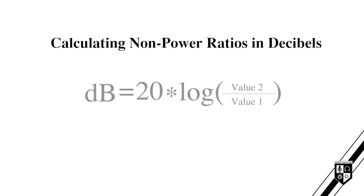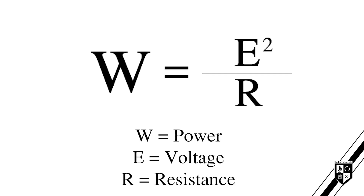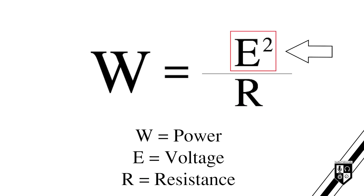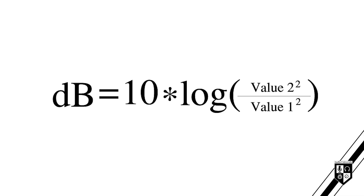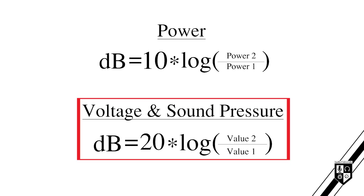The decibel can be used to represent the ratio between non-power quantities, such as sound pressure and voltage. When calculating voltage and sound pressure levels, use the formula with 20. The reason we multiply by 20 is explained by the power equation, where W is power, E is voltage, and R is resistance. Notice that voltage is squared in this equation — power is proportional to voltage squared. Quantities that are not power must be made proportional to power. Any time you're comparing power quantities in decibels, multiply the Bell formula by 10. Any time you're comparing non-power quantities in decibels, multiply the Bell formula by 20.